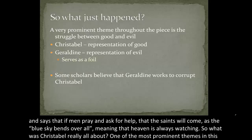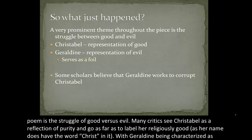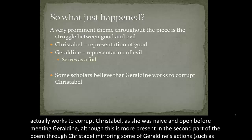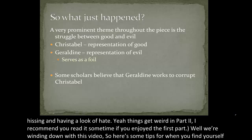So what was Christabel really all about? One of the most prominent themes in this poem is the struggle of good versus evil. Many critics see Christabel as a reflection of purity — even labeling her religious, as her name contains the word 'Christ' — while Geraldine, characterized as supernatural and probably evil, serves as a foil for Christabel. In literature, a foil is a character who contrasts with another in order to highlight particular qualities. Some scholars believe Geraldine works to corrupt Christabel, who was naive and open before their meeting, though this is more present in part two of the poem.